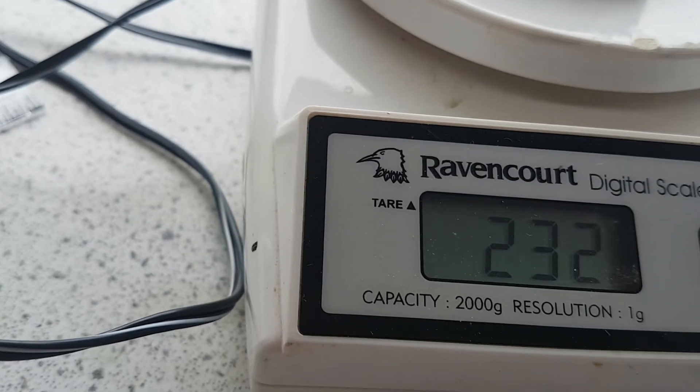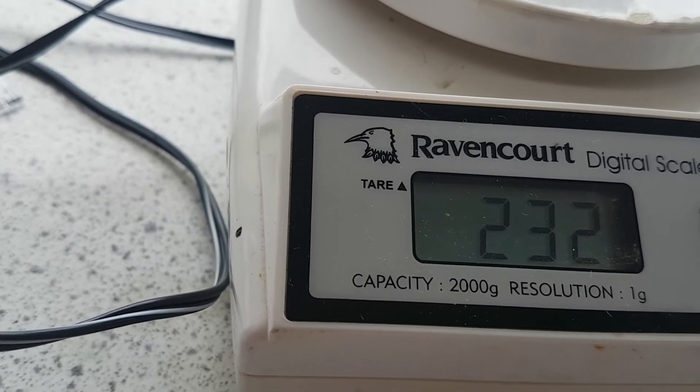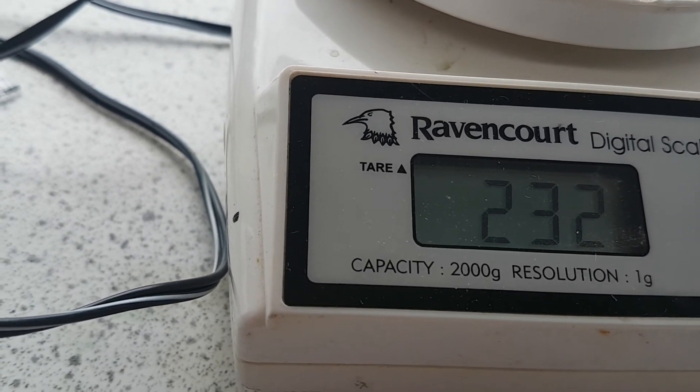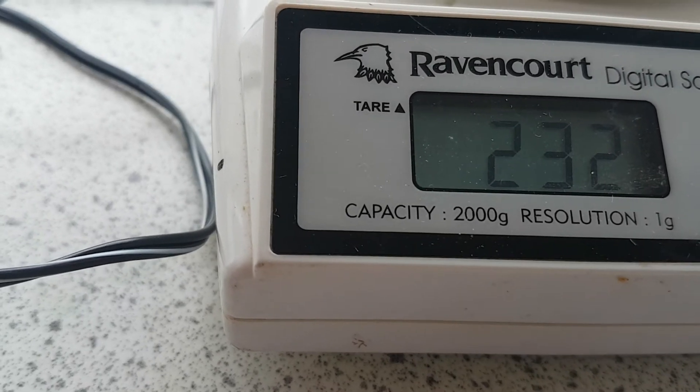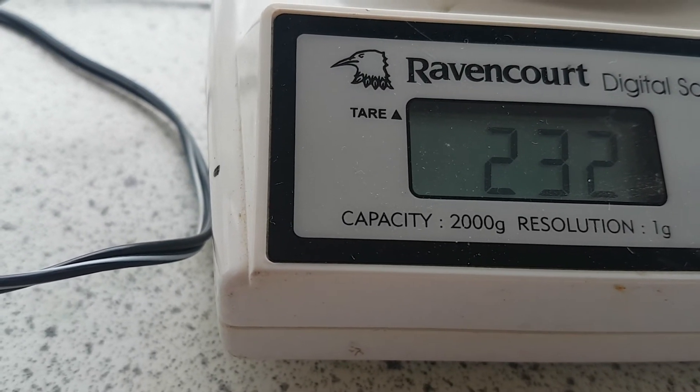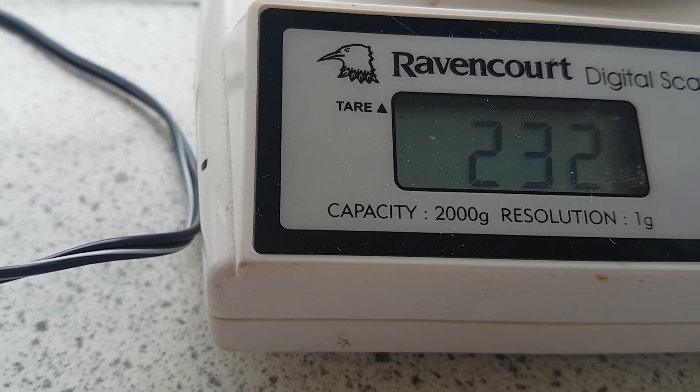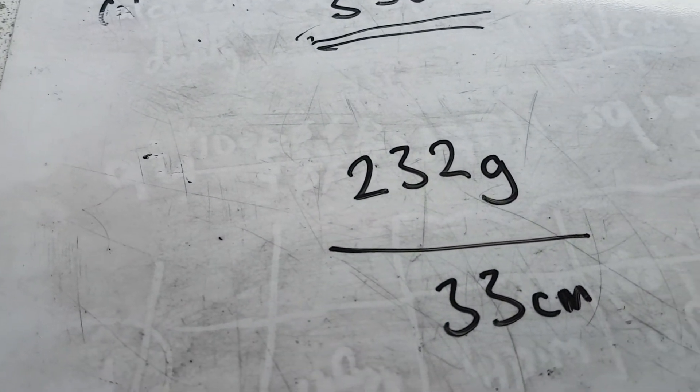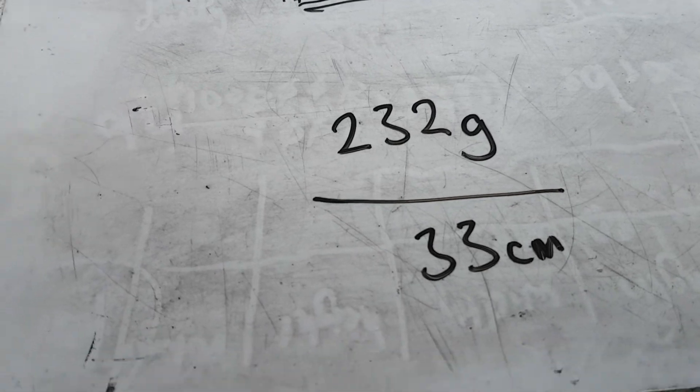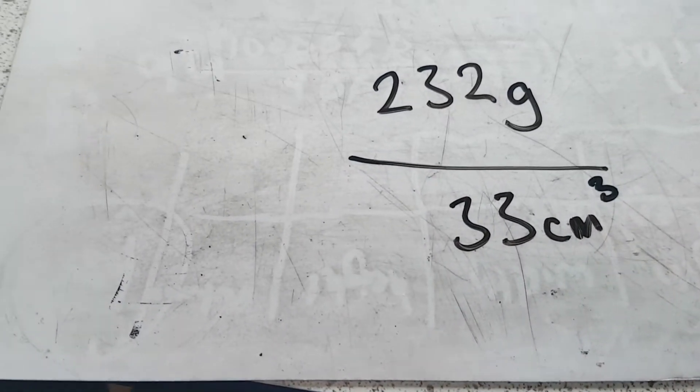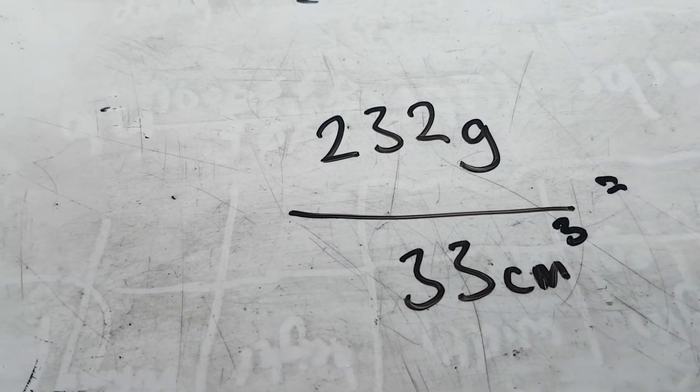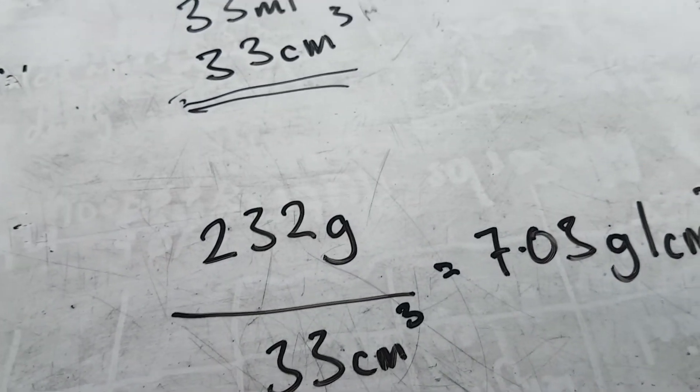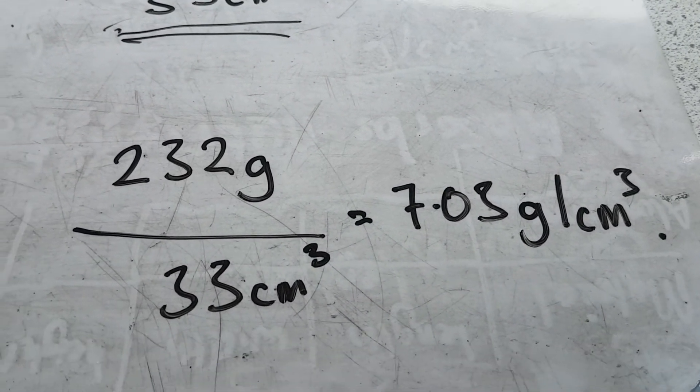So I've got a mass of 232. Now, so obviously that's not good experimentation because I've got some water on that and whatnot. So it's 232 grams. We'll just stick with that for now. Divided by 33 centimeter cubed. I have to work out my density. So it's 232 grams divided by 33 centimeter cubed. You do that on your calculator.